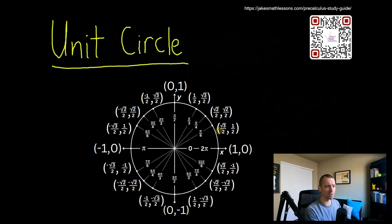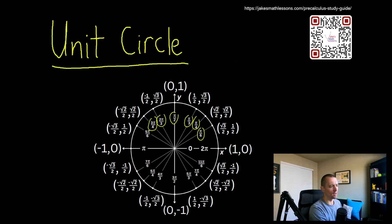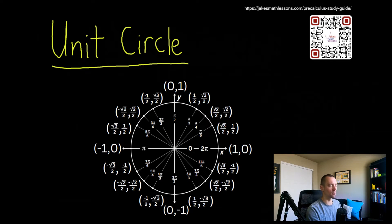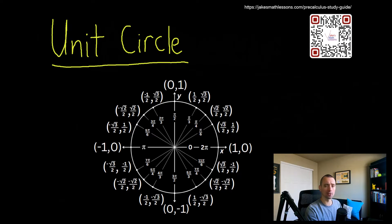They're actually relatively easy to memorize. I know it looks like a lot — pi over six, pi over four, all these different radian measures — it kind of seems like a lot to memorize. There is a pattern that makes them actually relatively easy to memorize, and there's also a pattern with the points themselves on the edge of this circle. I'll talk more about that in an upcoming video. But first, I want to talk a little bit about how to actually use this unit circle to evaluate different trig functions.